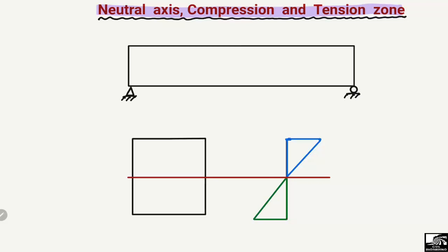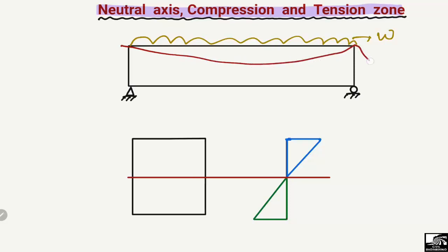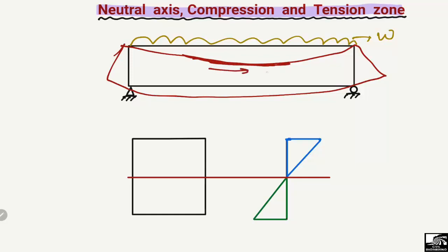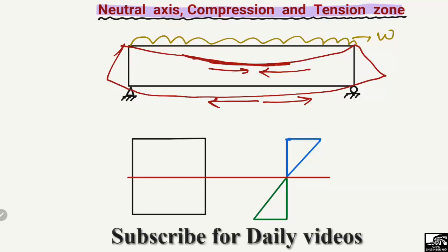Now here we consider a simply supported beam, and for example there is some load acting on this beam — there may be some uniformly distributed load acting on it. Due to this load, the beam will try to bend. We will see that it will bend like this, and on the top of the beam it will be compressed, showing compression, while the bottom of the beam will be in tension. The length of the beam at the bottom will be extended while at the top it will contract.